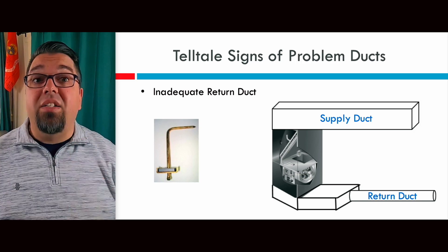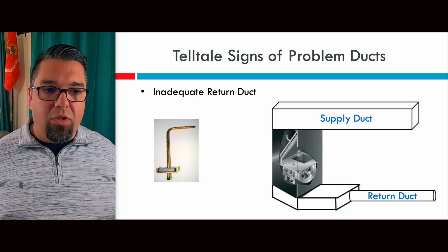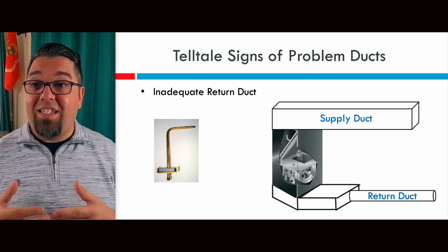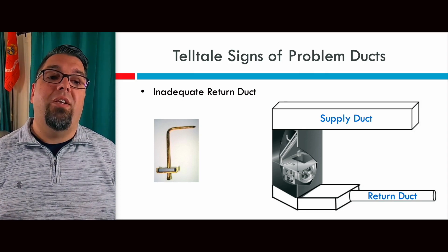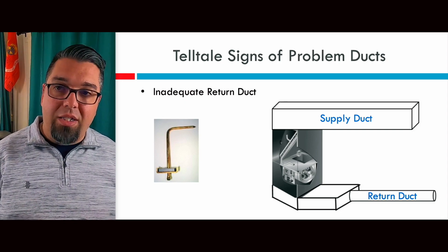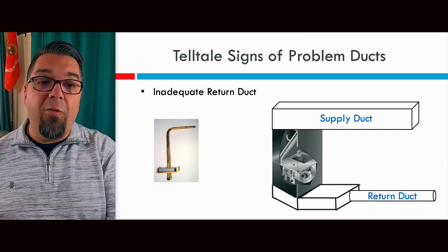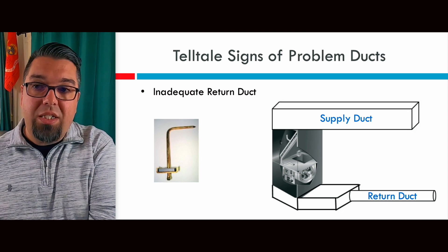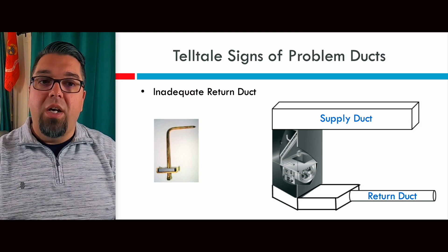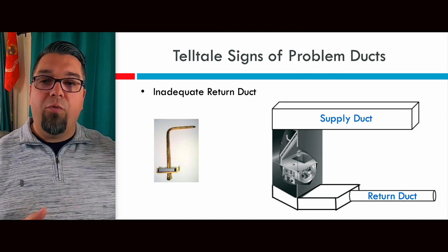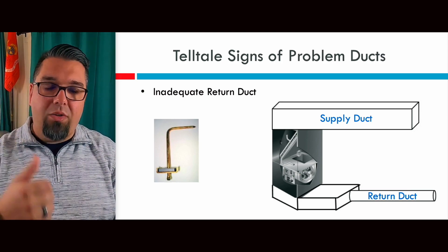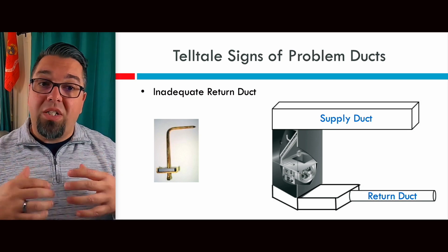Let's talk about some of the telltale signs of what you see out there with existing duct systems. The number one reason is inadequate return ducts — where the supply duct may be sized correctly, but the return duct is much smaller than it needs to be. We see this when you replace an inefficient older 80% furnace and put in a much higher-volume, high-efficient furnace, because now instead of that heat going out the flue pipe, it's actually going to need a bigger bus to deliver the BTUs to the space — not let it go outside. So you need more CFM when you do that.